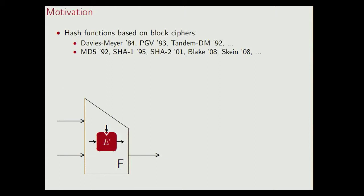However, building a compression function from a block cipher has some disadvantages. Most importantly, every new compression function evaluation usually results in a different key input to the block cipher, and hence you need related key security of the block cipher in order to get a secure construction. Additionally, as every new evaluation results in a different key, you need to evaluate the key derivation function every time, which results in some efficiency loss.